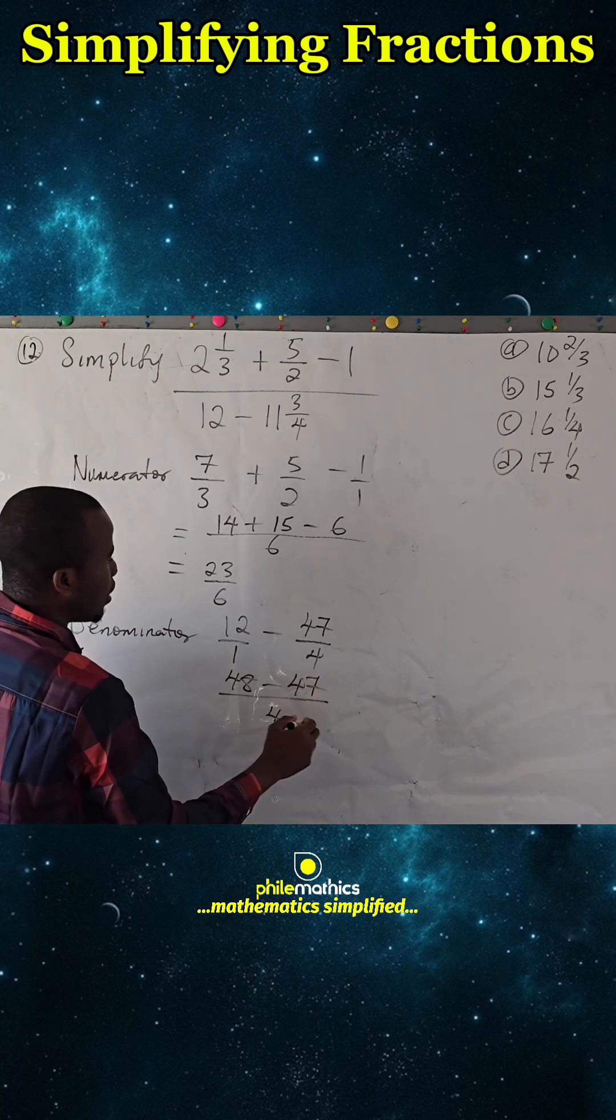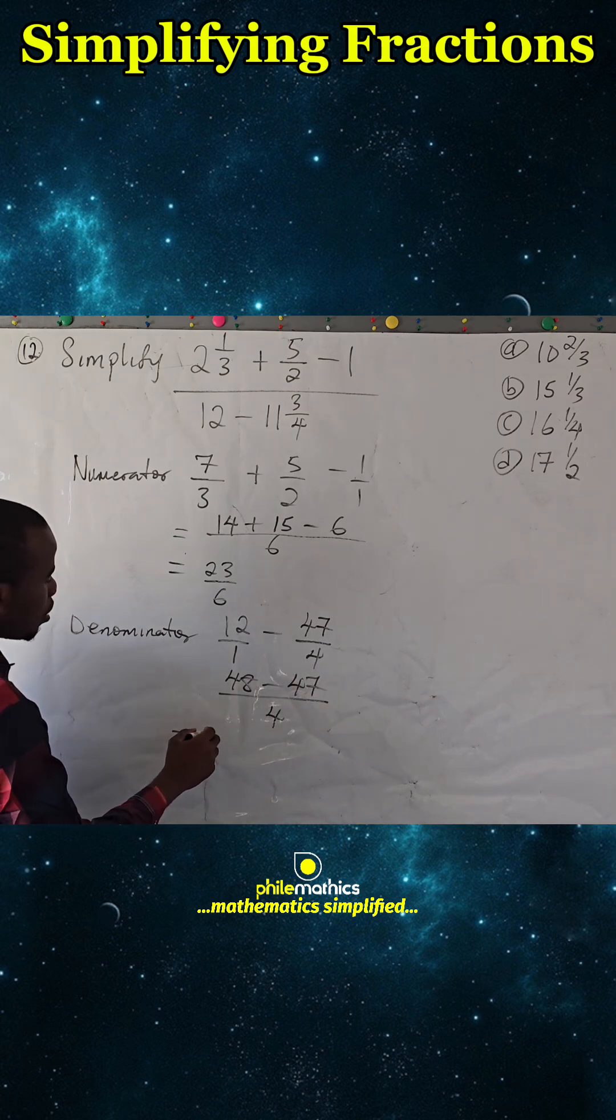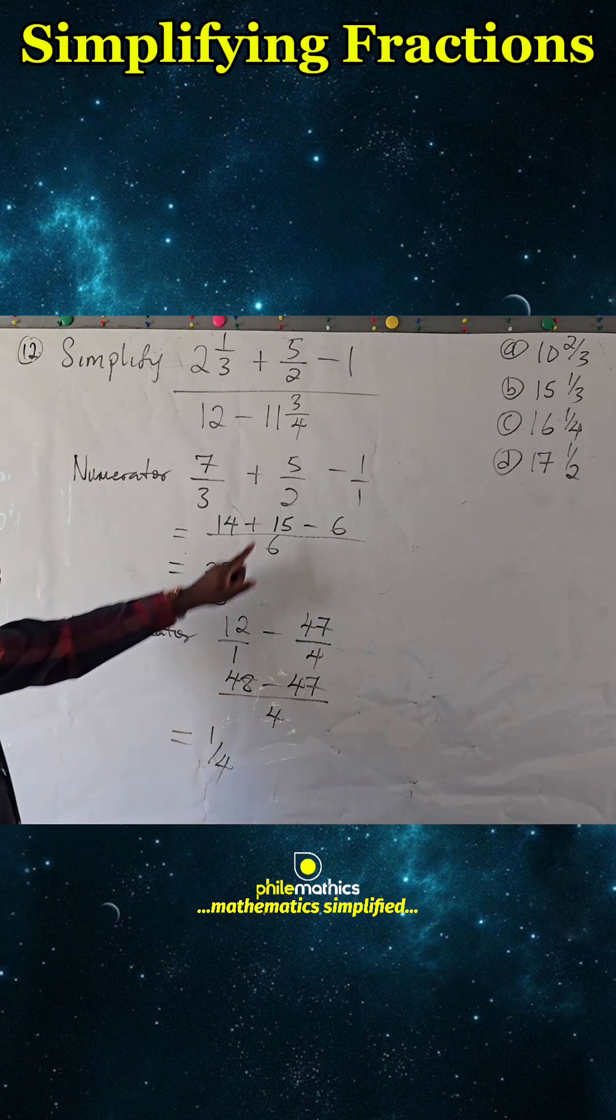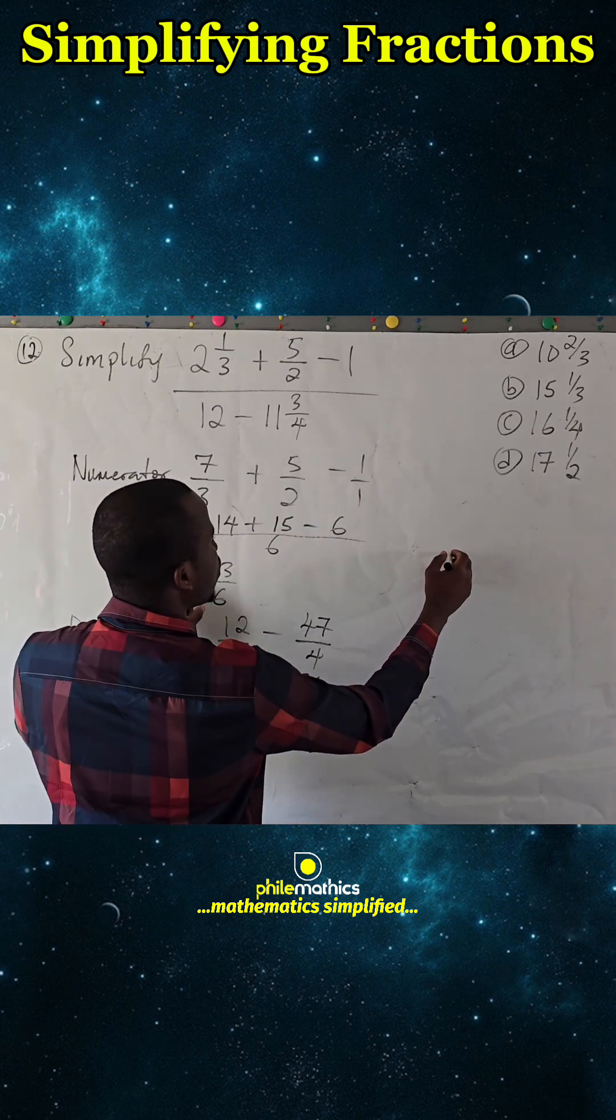And this is simply 1 over 4. Now if we put both of them together, this will be numerator 23 over 6 divided by 1 over 4.